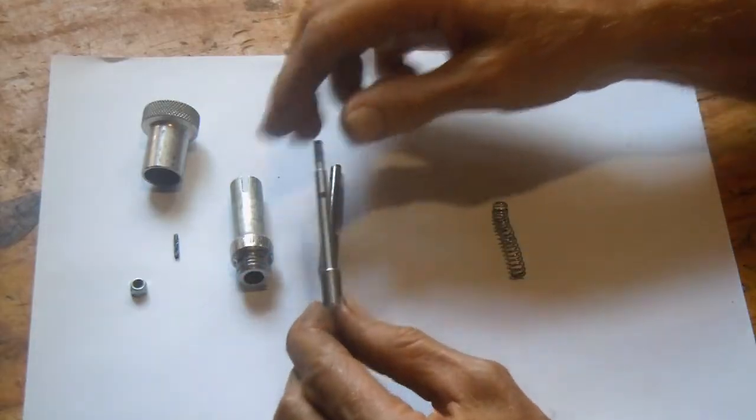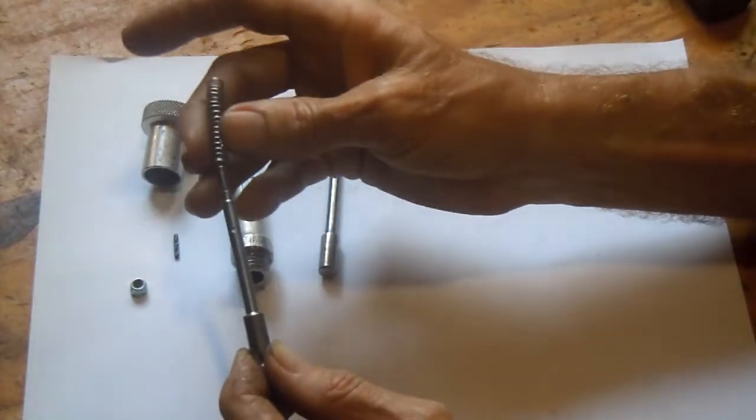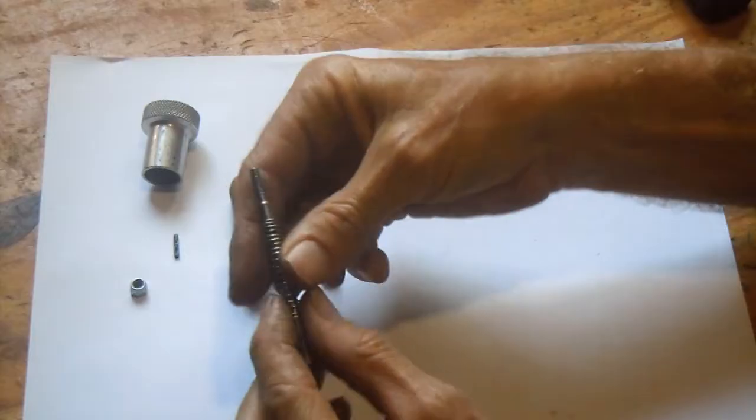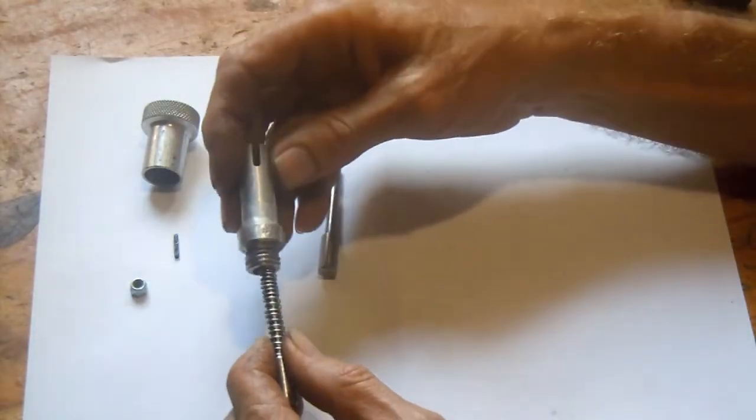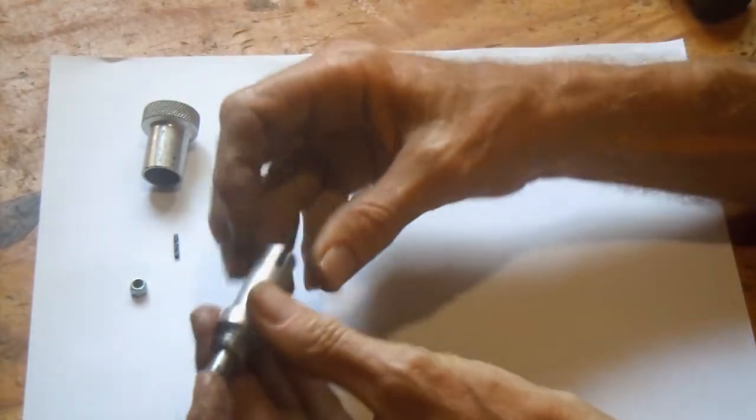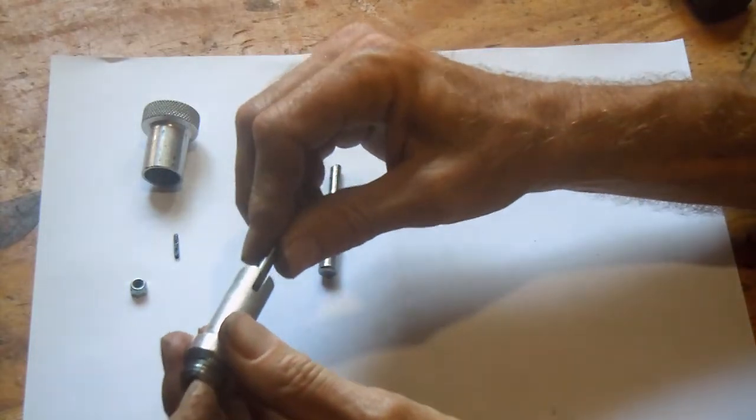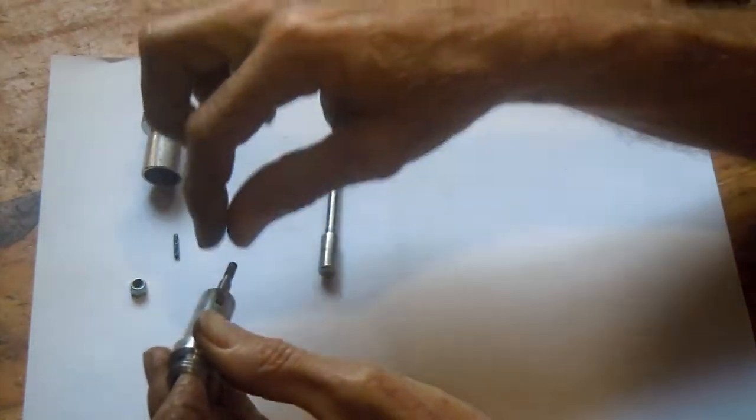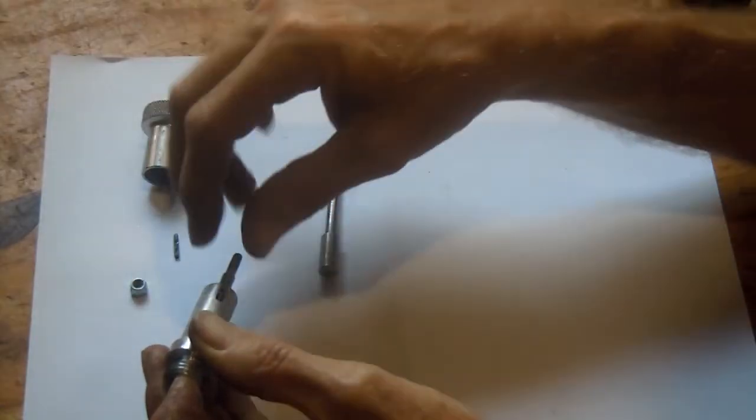So how this works is that this spring goes over here, then this part together with spring goes into this here. In putting it together one would then have to hammer the pin in there. Once the pin is in there, what happens is the pin actually slides up.